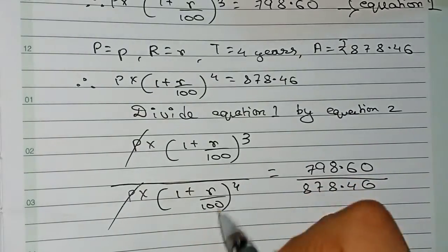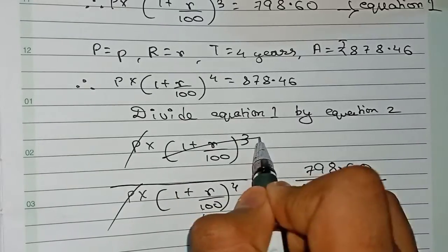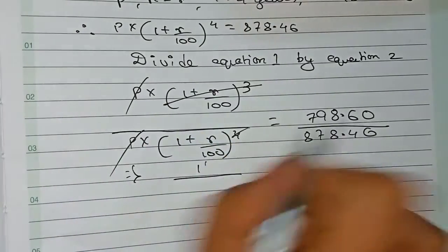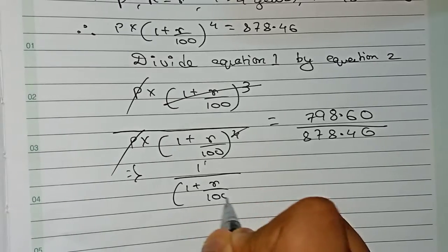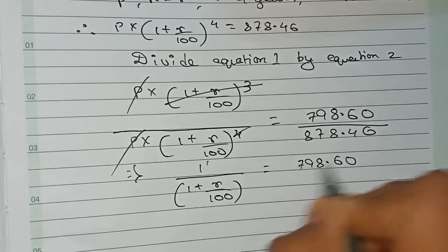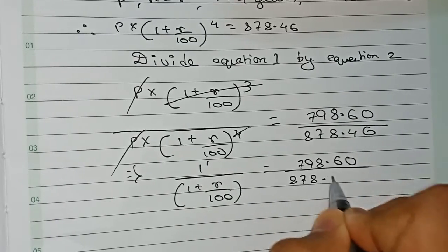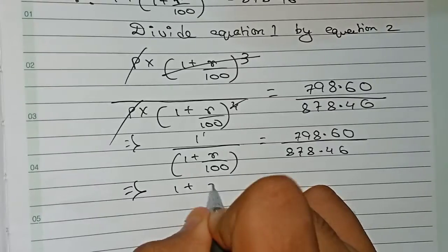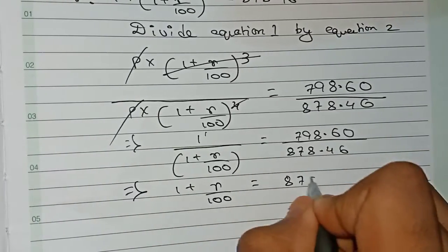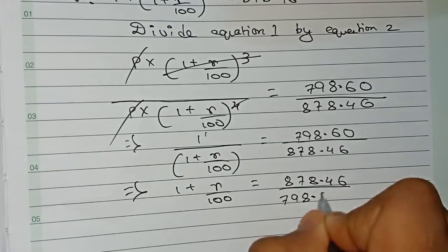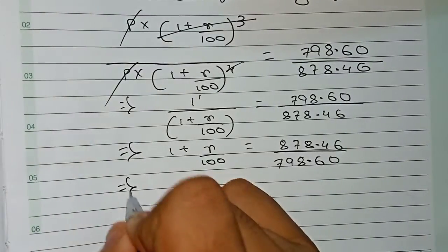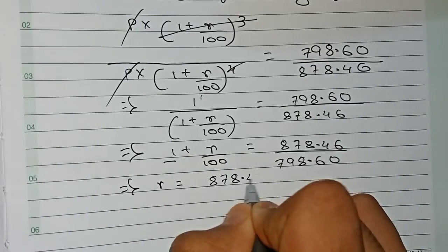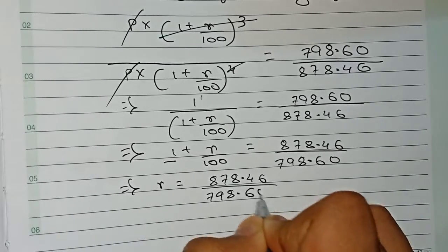After cancelling P, and since the exponents are 3 and 4, we cancel the common power, leaving 1 divided by (1 + r/100) equals 798.60 by 878.46. Taking the reciprocal of both sides, we get 1 plus r by 100 equals 878.46 by 798.60.